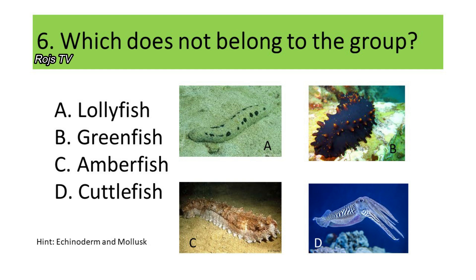These organisms fall under either Phylum Mollusca or Echinodermata. If your answer is D, cuttlefish, you are correct. Cuttlefish fall under Phylum Mollusca, while the lollyfish, greenfish, and amberfish fall under Phylum Echinodermata.